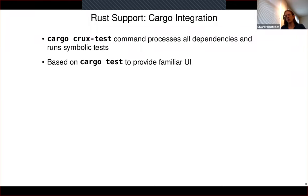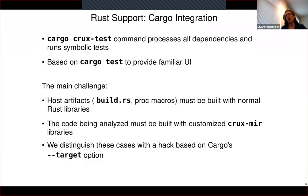For cargo integration, we have the cargo crux-test command, which processes all dependencies and runs the symbolic tests. This is based on cargo test and tries to provide a familiar UI for developers. The main challenge is that some things cargo builds and runs at build time — build.rs and proc macros — need to be built against the standard version of the standard library, whereas the code we want to analyze must be built against our custom fork where some constructs have been replaced with solver-friendly versions. We distinguish these with the --target option, which is an admittedly awful hack, though Miri and some other tools use the same trick.